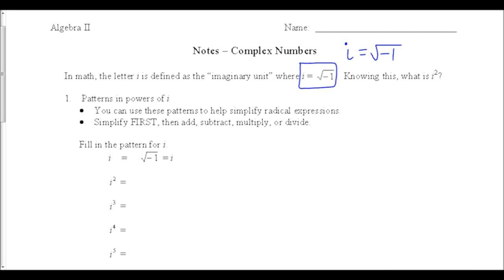If we're going to work with this, what happens if we square i? Well, if we square i, then we have the square root of negative 1 squared, which should be negative 1.